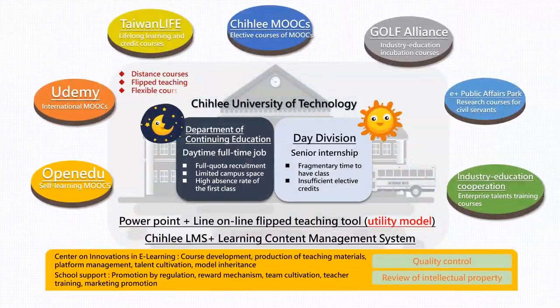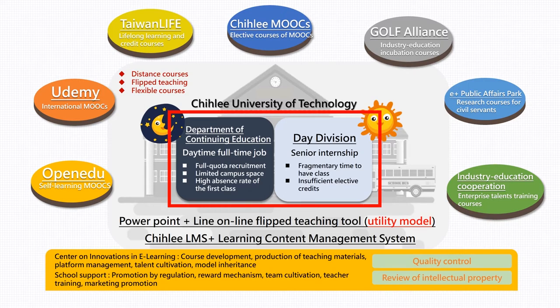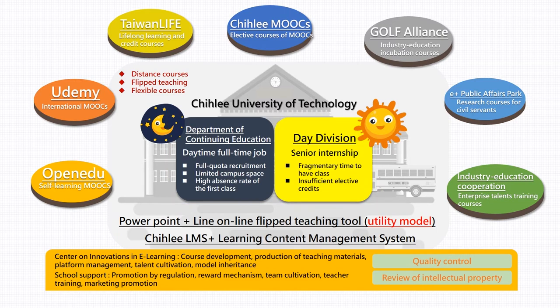As the campus is located in the core district of New Taipei City, we have over 10,000 students in the full-time undergraduate division and the Department of Continuing Education in a limited space. The academic learning needs of students in the full-time undergraduate division and the continuing education division differ greatly. For example, students in the full-time undergraduate division need to work as interns in enterprises in their senior year, so it is difficult for them to schedule classes.